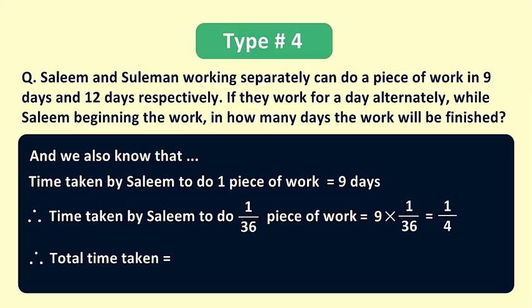Therefore total time taken by Salim and Suleiman working alternately is equal to 10 days plus 1/4 days, which is equal to 10 and 1/4 days. And that's the answer.